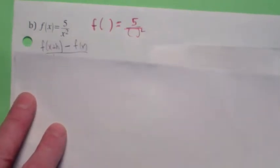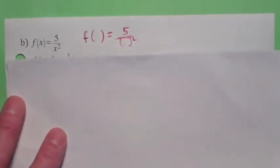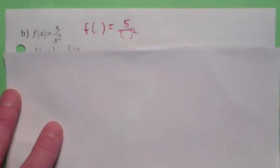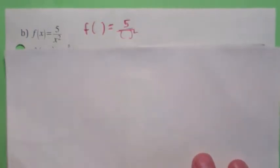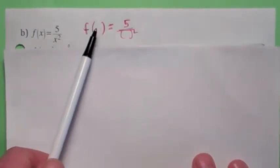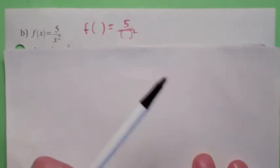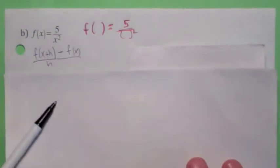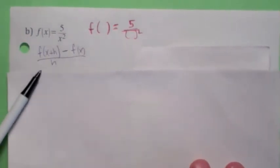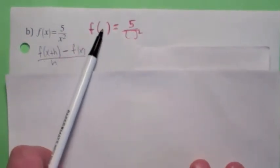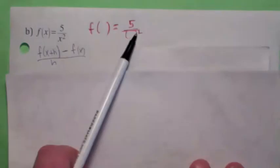Like this one, it's more complicated here. Suppose the function is 5 over x squared, and you want to compute the difference quotient. Remember the function notation. You can find f of anything by putting that anything down here, right? So what would the difference quotient look like here for this function? Well, what would f(x+h) be? Wouldn't it be 5 over (x+h) quantity squared?